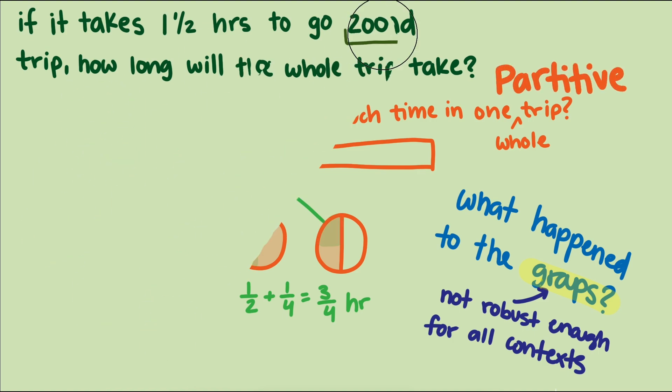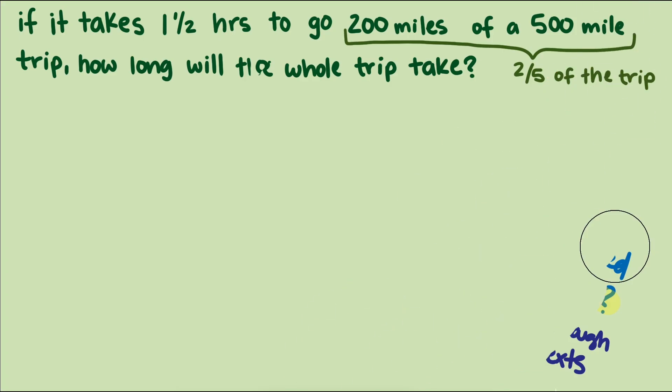OK, so back to the harder version. If this context needs partitive division, how can we think about sharing one and a half hours with two-fifths? It's a little trickier when the divisor is a fraction, but I'd encourage you to pause the video here. Take some time to think through this yourself before we show you the solution.